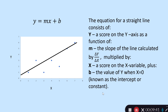The slope m is multiplied by x — a score on the x variable — and we also add b, which is the value of y when x equals zero. That's known as the intercept, sometimes called the constant. It's worth knowing they're the same thing; SPSS refers to it as the constant.